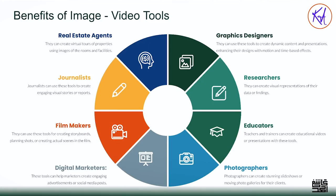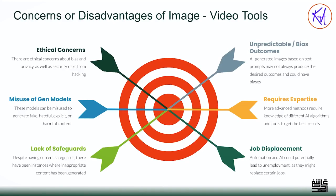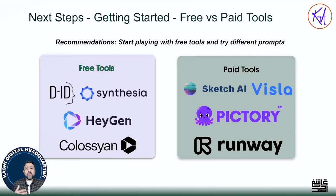There are also concerns with these tools, similar to other LLMs — depending on training data quality, results can be unpredictable and biased. A significant concern is misuse of generative models and the lack of safeguards. Anyone could take your picture, add a script, and post it somewhere. If you're a public figure with content on YouTube or social media, someone could animate it. I'll also cover text-to-voice in a future session, which introduces additional risks like voice cloning. These raise ethical concerns around security and privacy — you can't just trust what you see. Many companies are working on watermarking AI-generated content.